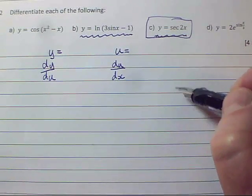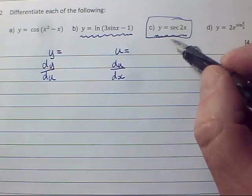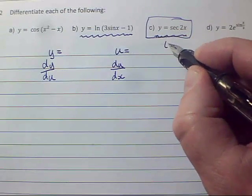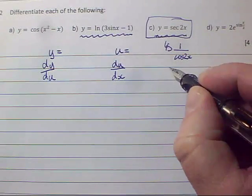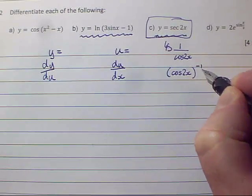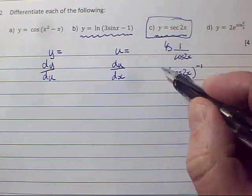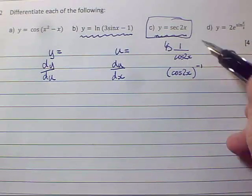Never ever forget that you have some help in your formula book. Although it is possible to do this one by going back to first principles and saying it's one over cos of 2x and differentiating that using the chain rule, because it's cos of 2x to the power minus one.